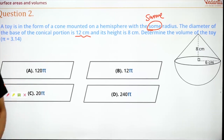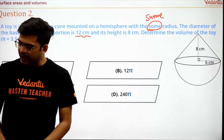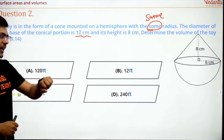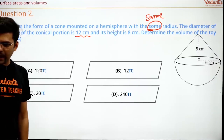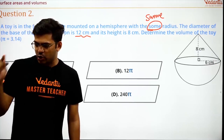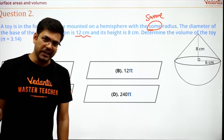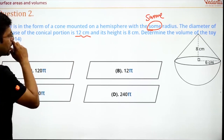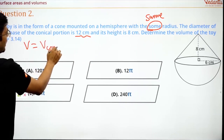Answers are coming in — someone is saying B, C option is also coming, someone said A, D is also coming. I'm getting mixed replies from everyone. I'll give you 10 more seconds to solve this. Time's up! Many of you have got the right answer. Protocol got the right answer very early, and Somya got it too — very good, both of you are doing great.